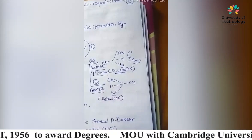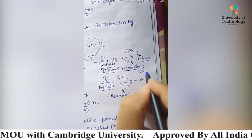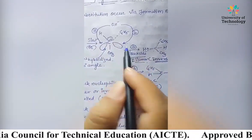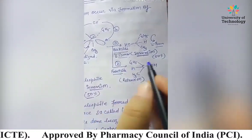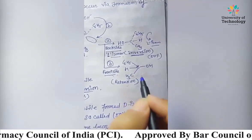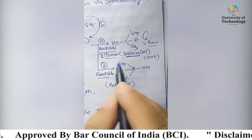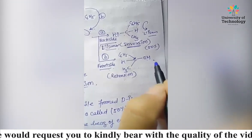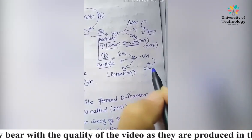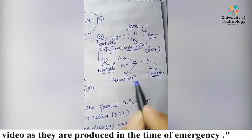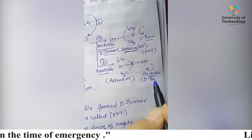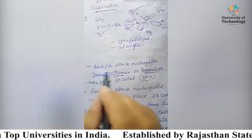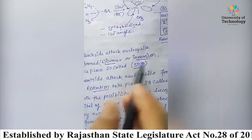What is called inversion? In the formation of tertiary butyl alcohol, applying the sequence rule, we have hydroxide ion, then methyl, then hydrogen. This process is clockwise, and the clockwise formation is called the D-isomer.